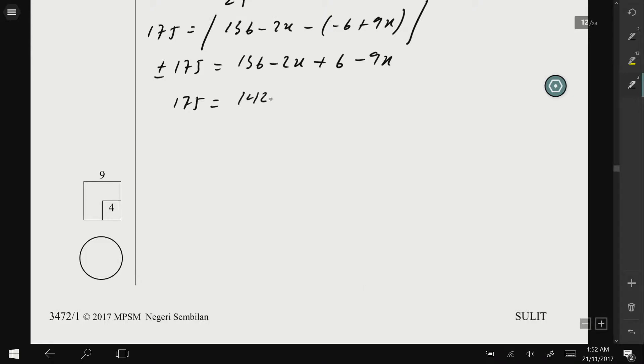142 - 11x. The second part is where 175 becomes negative. So solving for x, we should get...